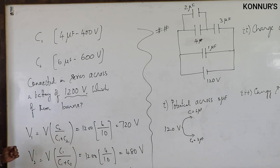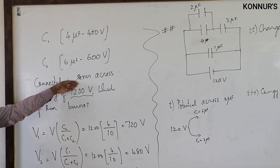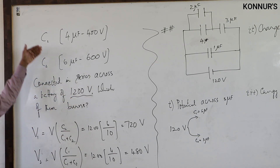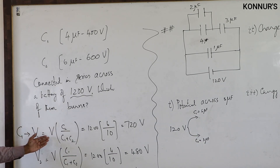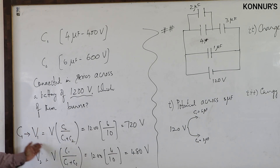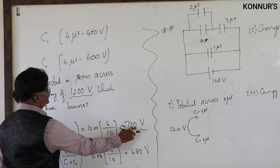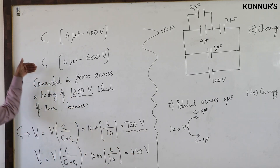Solution: In series, potential divides. So this 1200 volts will divide between C1 and C2. The voltage across C1 is V1 = (C2 / (C1 + C2)) × total volts, which gives 720 volts. The remaining 480 volts appear across C2.